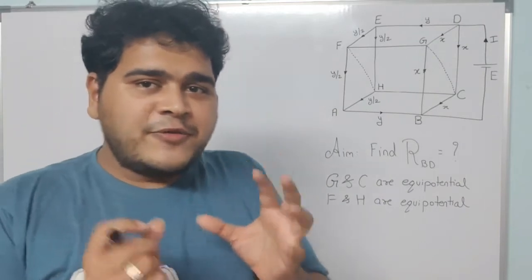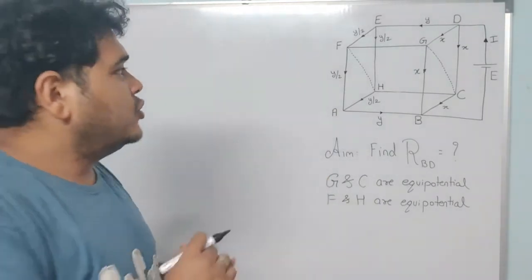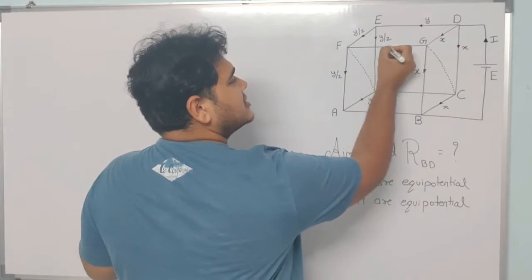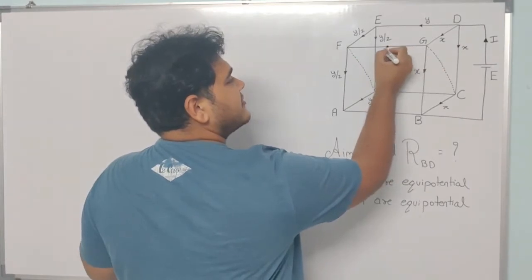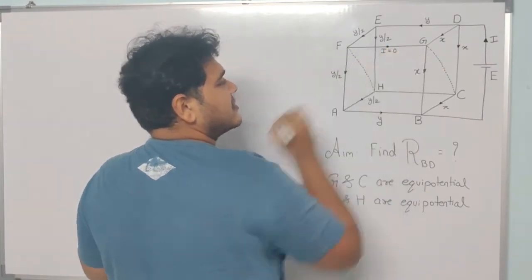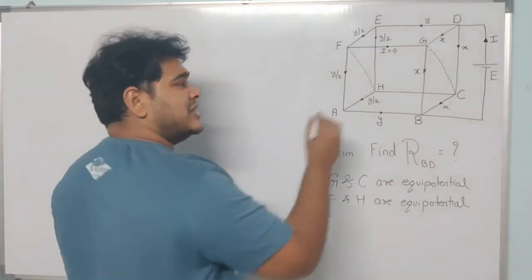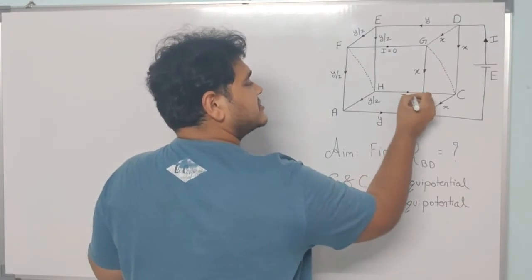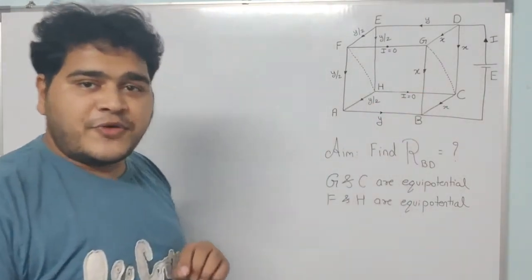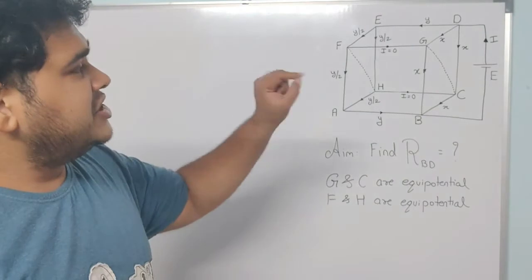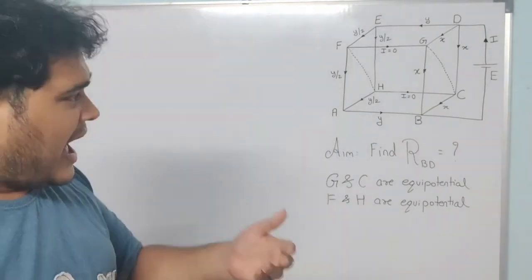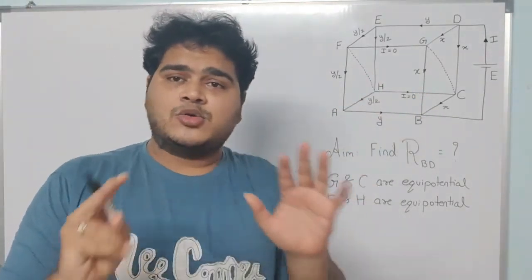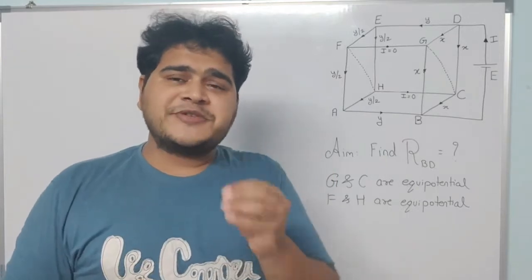As a result, no current flows through branch GF or branch CH. The current in both GF and CH is zero.